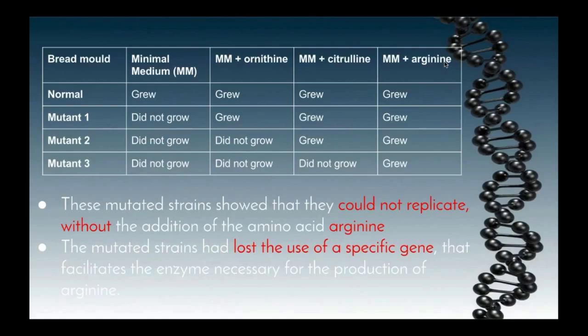When only the minimal medium was present, there was no growth at all. With other mutations, growth was evident with the introduction of a particular amino acid. In particular, if we look at mutant 3, we can see that the only time this mould was able to grow was when the amino acid arginine was added.